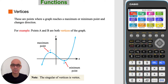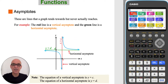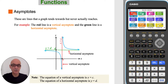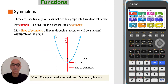Vertex A is a maximum point and vertex B is a minimum point. The asymptotes are lines that a graph tends towards but never actually reaches. The red line is a vertical asymptote and the green line is a horizontal asymptote. The equation of a vertical asymptote is x equals C, where C is the x-intercept of that line, and the equation of a horizontal asymptote is y equals D, where D is the y-intercept.